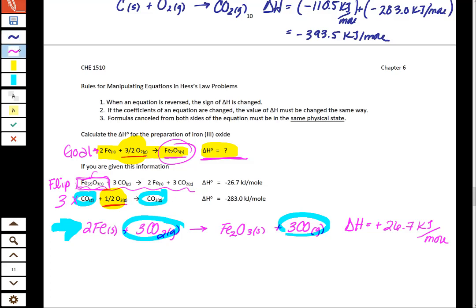So I have three CO gases plus three halves O2 gas makes three CO2 gases. And my delta H I also multiply by three.